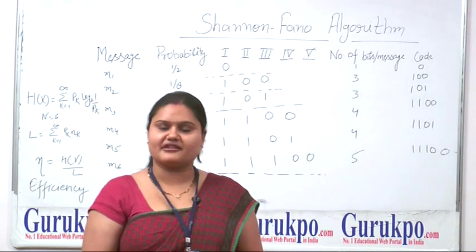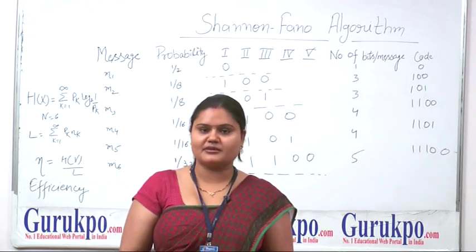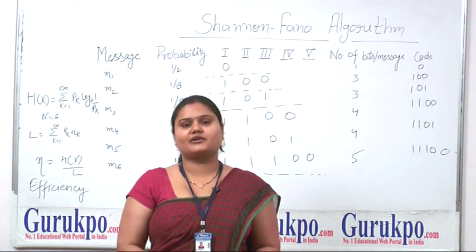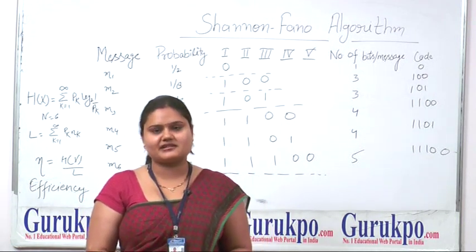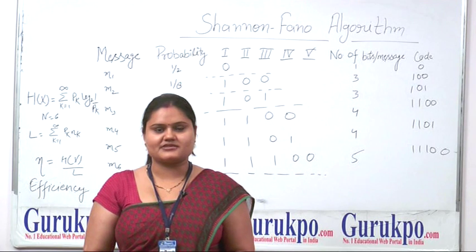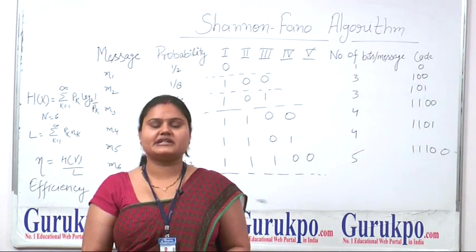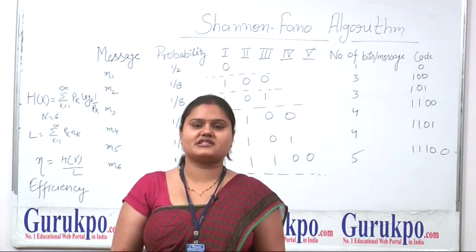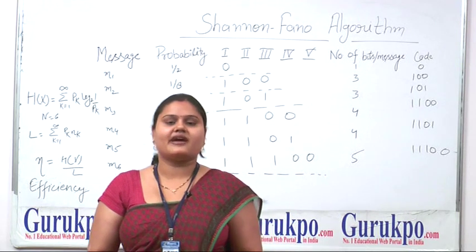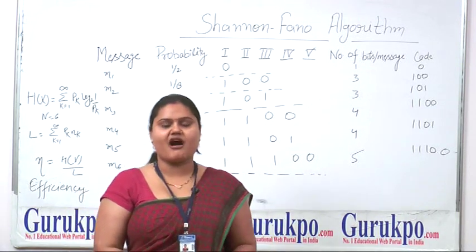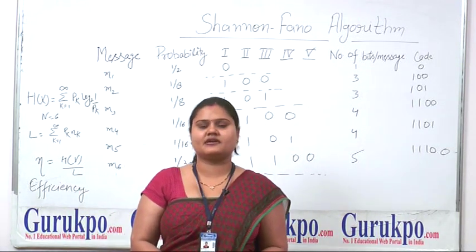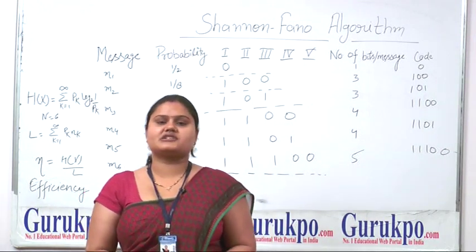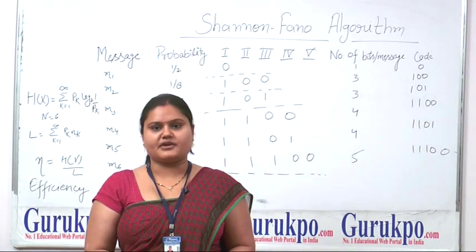Why are we using the Shannon-Fano Algorithm? In information theory, we have to calculate the message signal with the required probabilities. This basically depends upon two algorithms: first is Shannon-Fano and the second is Huffman coding. Here we are describing the method and steps to solve a Shannon-Fano Algorithm.